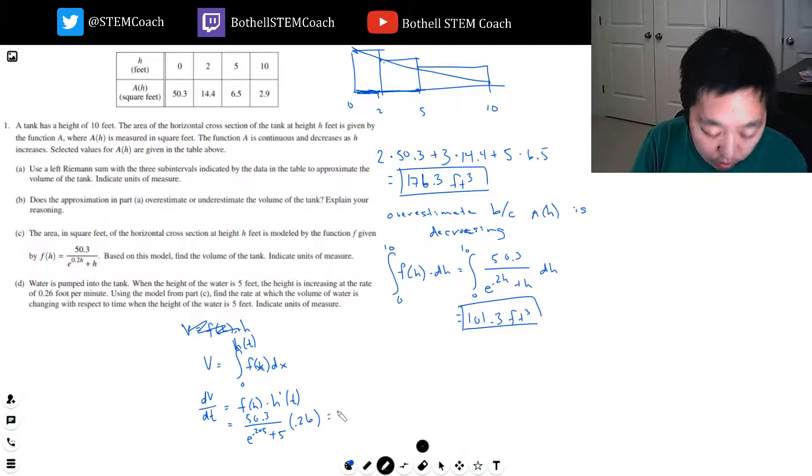So then this I can do as a calculator. 50.3 divided by... That's E to the 1. So this is E. E to the 1 plus 5 times 0.26. 1.694. And let's check units.